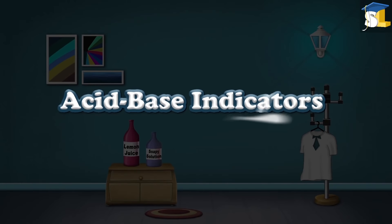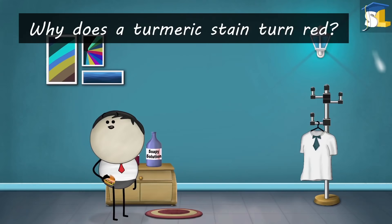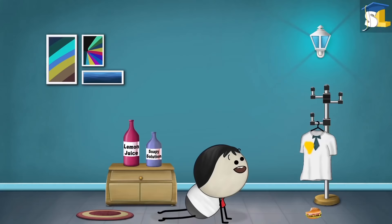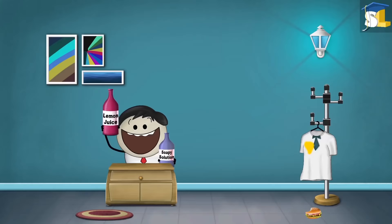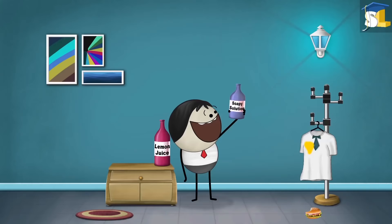Acid Base Indicators. Why does a turmeric stain turn red? You got a stain on the shirt. Don't wash the stain with the soapy solution — the stain will turn red.